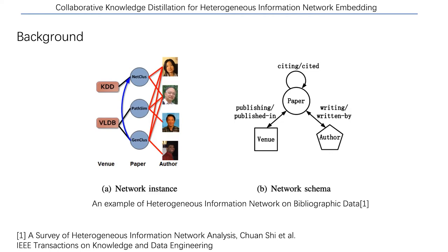Although the above framework has been widely used by existing HIN embedding methods and somehow seems reasonable, each metapath is modeled independently. So here comes the first research question: should the metapaths be modeled independently? Alternatively, each metapath is a view or a description of the HIN. At different views of the same object, the metapaths are naturally correlated.